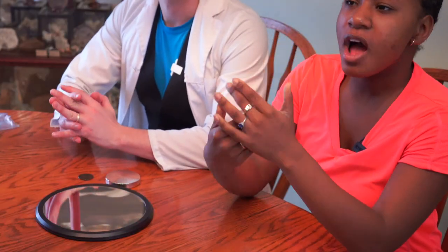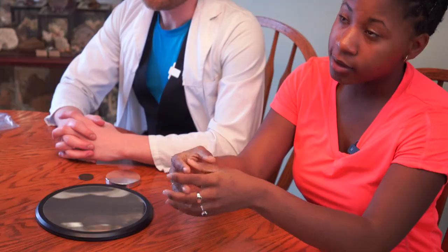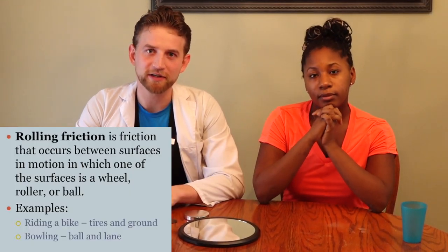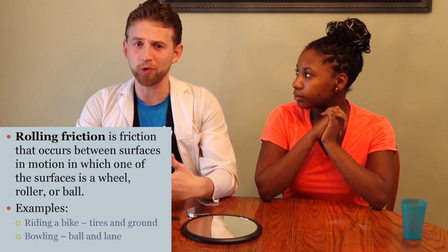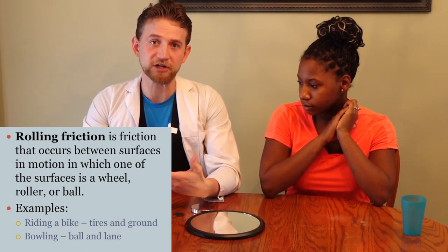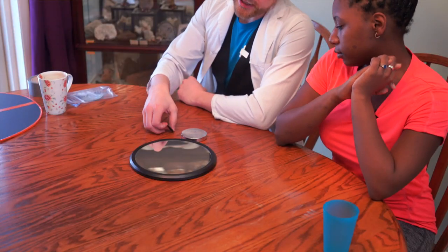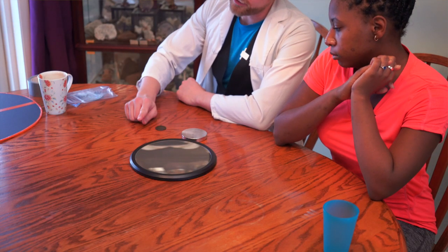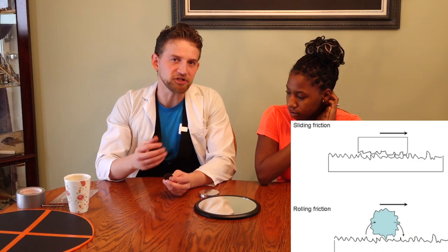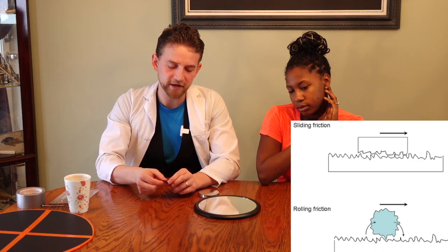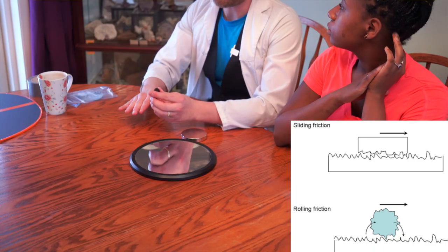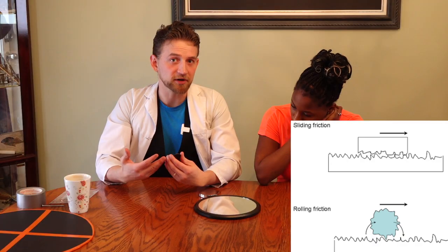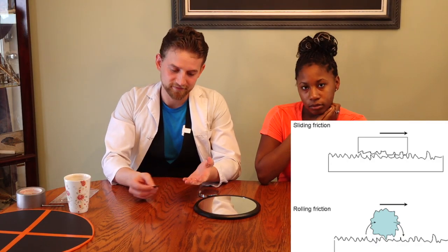In order to understand Euler's disc, and more importantly, why it stops, we have to understand something called rolling friction. Rolling friction is very much what it sounds like — when something is rolling across the ground, it's the force that eventually brings it to a stop. If I were to take something flat and push it across the table, it stops because the energy I imparted to this coin is used up in heat as it slides across the table, and vibration or sound as it hits things.